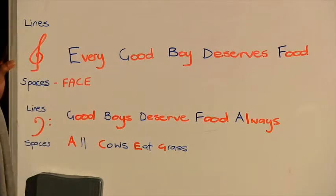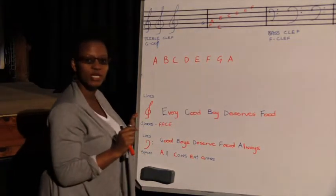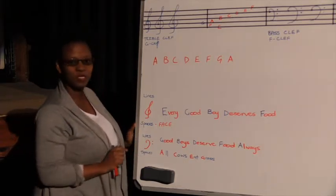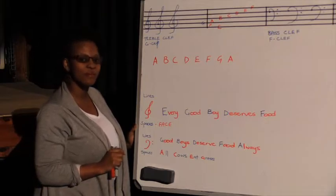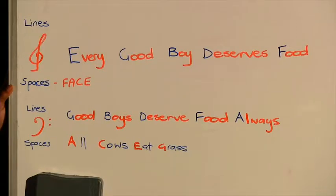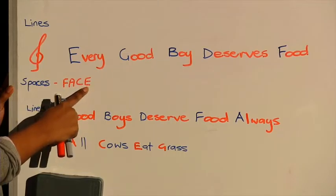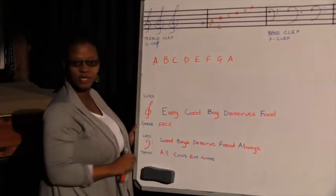But if you remember Every Good Boy Deserves Food, then you'll know all your lines for the treble clef. Now for the spaces, you can just remember the word FACE: F, A, C, E. It's all the spaces on the treble clef.